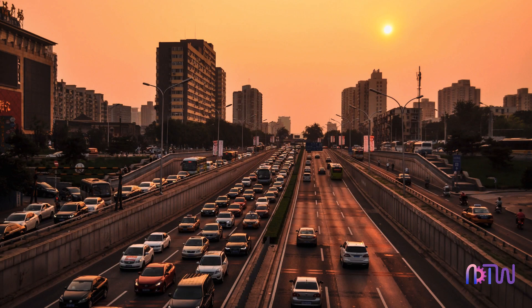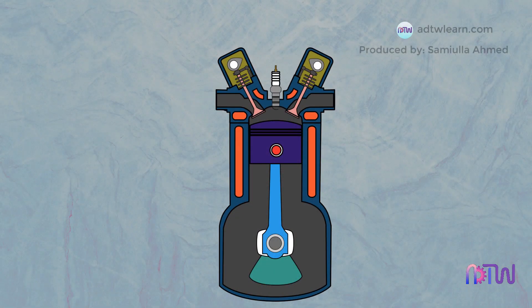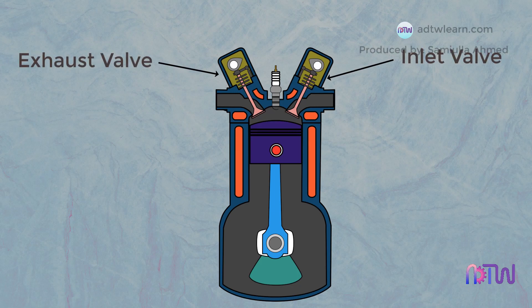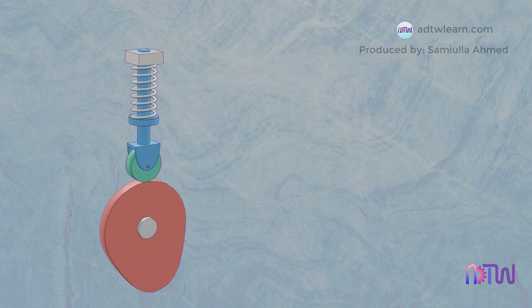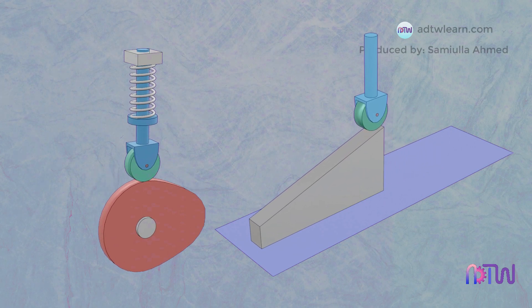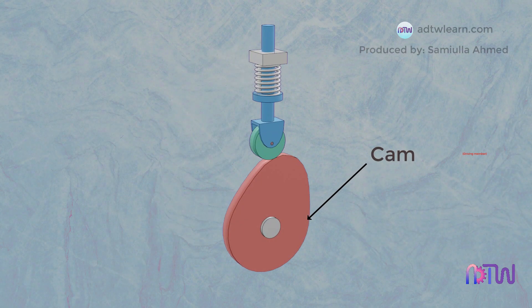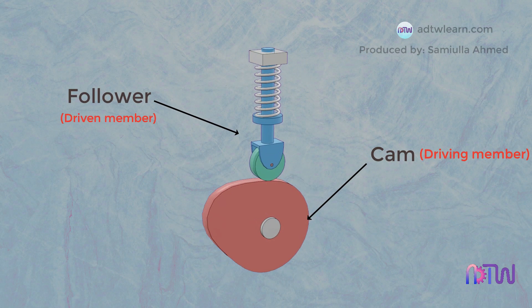It is widely used in automobiles to direct the opening and closing of inlet and exhaust valves at the desired time. Cams are either in rotary, reciprocating, or oscillating motion. The cam acts as a driving member, whereas the follower acts as a driven member.